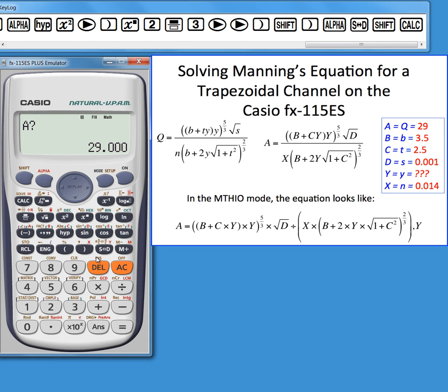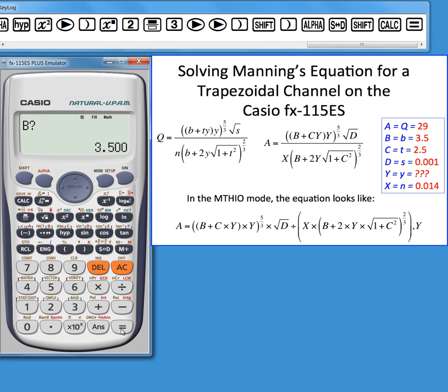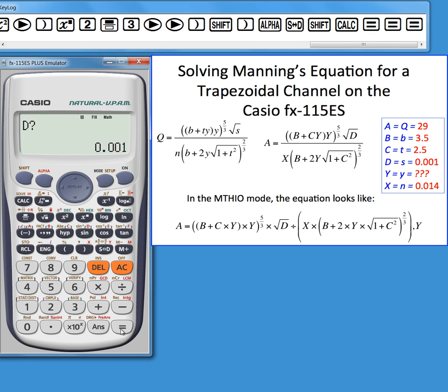I've already solved this once, so I already had A equal 29. If I hit enter, that value again: b equals 3.5, or enter a new value; c equals 2.5; d equals 0.001; x equals 0.014.